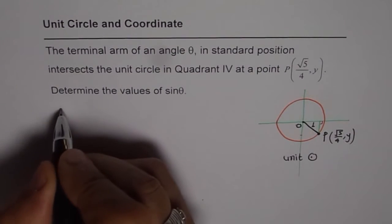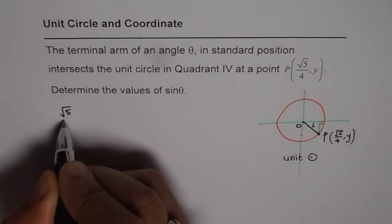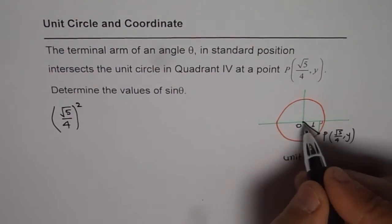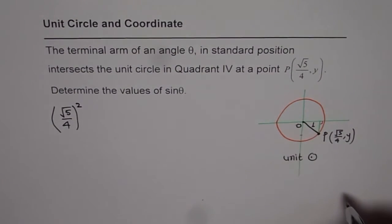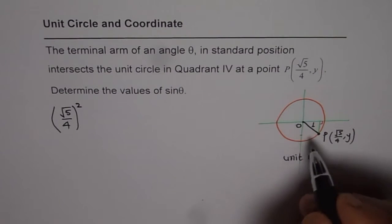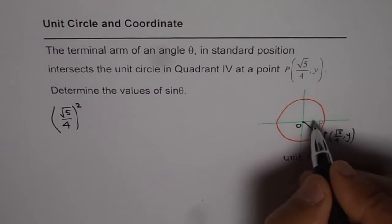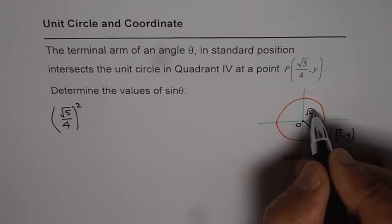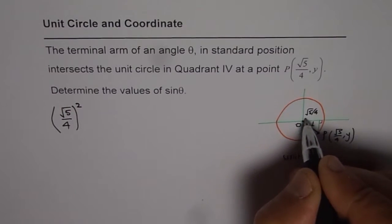So it should be square root 5 over 4 whole square. Since that forms a right triangle we can apply Pythagorean theorem. So the x value is square root 5 over 4. This is the x value.